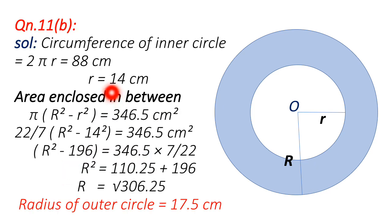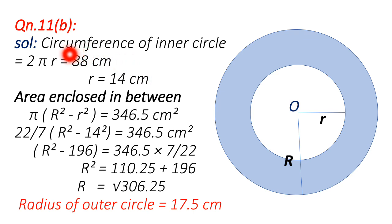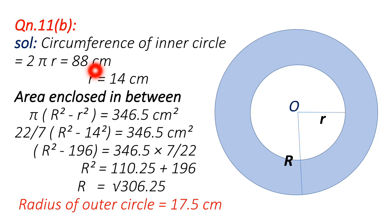Now we are at question number 11, bit B — bit A is similar. Here we have to calculate one of the radii; one radius is found because the circumference of the inner circle is given. Using circumference = 2πr = 88, and substituting the value of π, we can get r equals 14 centimeters. You can calculate that yourself.